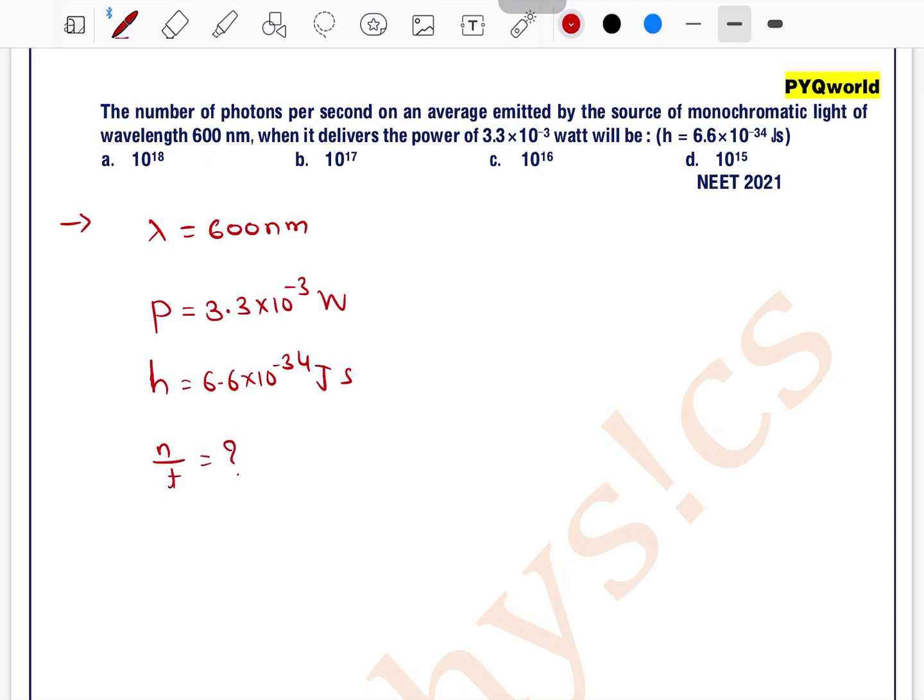So, we know that we can write power is equal to energy upon time. Power is equal to n hc by lambda divided by time, where energy associated with a photon is hc by lambda.